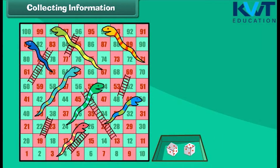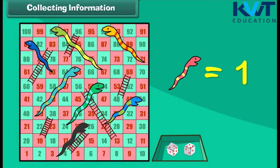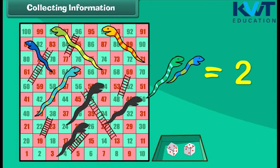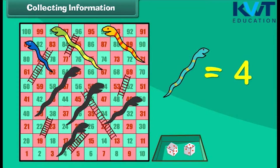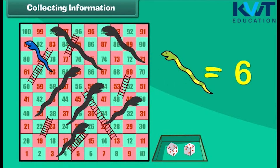Have you played this game before? Yes, it's the snake and ladder game! We will count the number of snakes and ladders seen on this board. Count with me. First, let us count and write the total number of snakes: one, two, three, four, five, six, and seven.